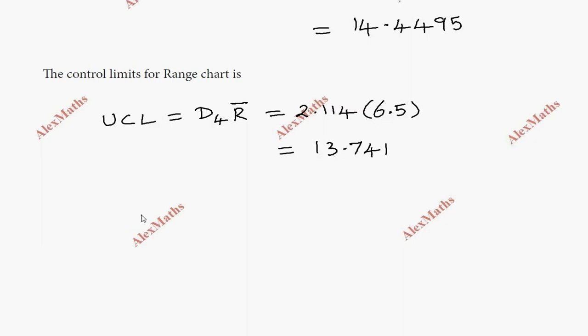The center line is R bar, which is 6.5. The lower control limit uses the formula D3 times R bar, but the table value for D3 is 0. So 0 times 6.5 brings the total to 0.